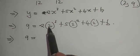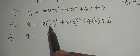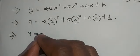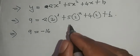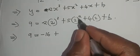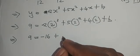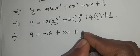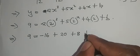So it's 2 cubed, 8 times -2 gives me -16 plus this becomes 20 (4 times 5) plus 8 plus b.